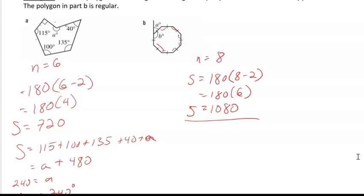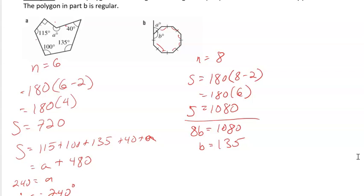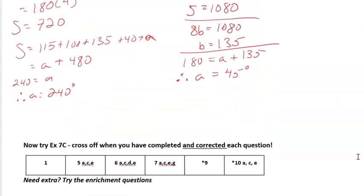Our angle is going to be 8 B's equals 1080, because that's a regular octagon. So if we divide all of that by 8, we find that B is 135. And if B is 135, then we look at the exterior angle. They are supplementary angles. So 180 is going to be equal to A plus B, or A plus 135. Therefore, I'm skipping a step, A is equal to 45 degrees. And there you go.